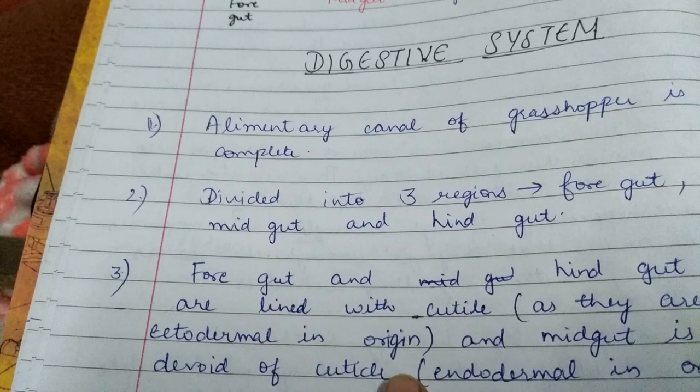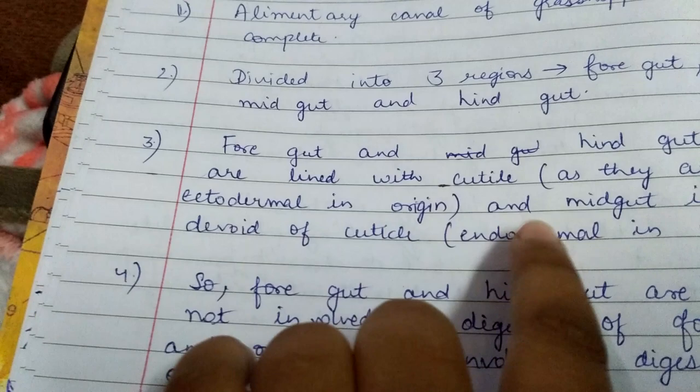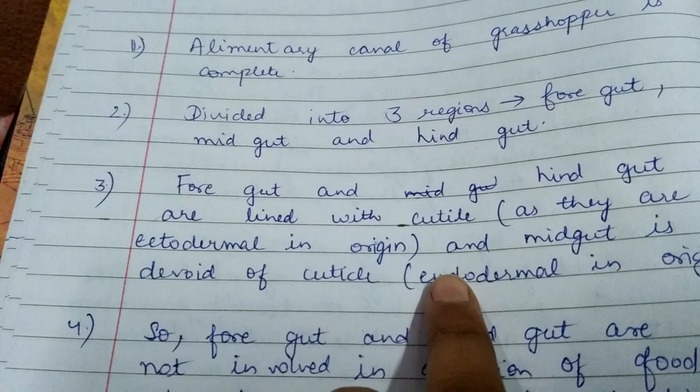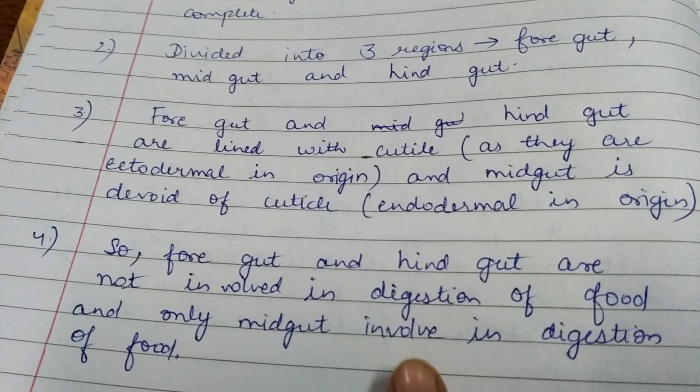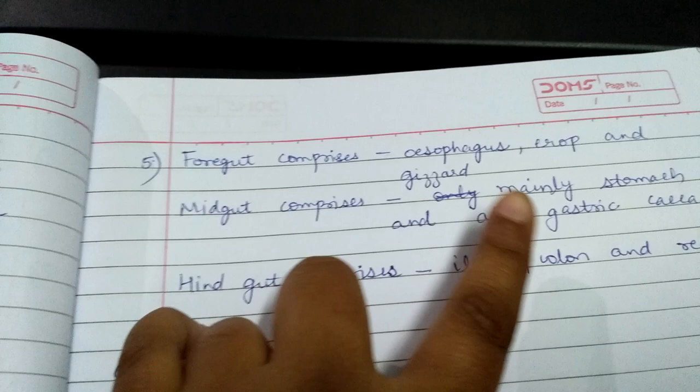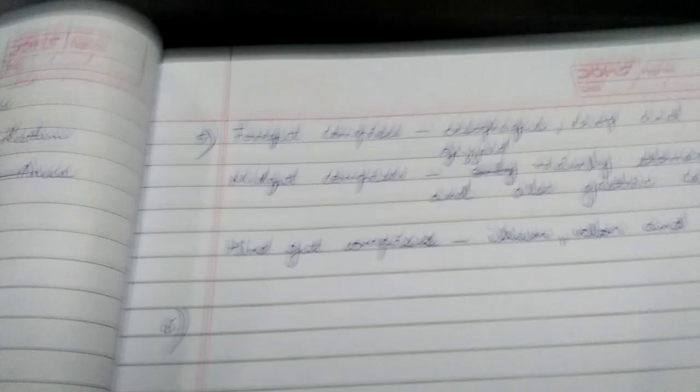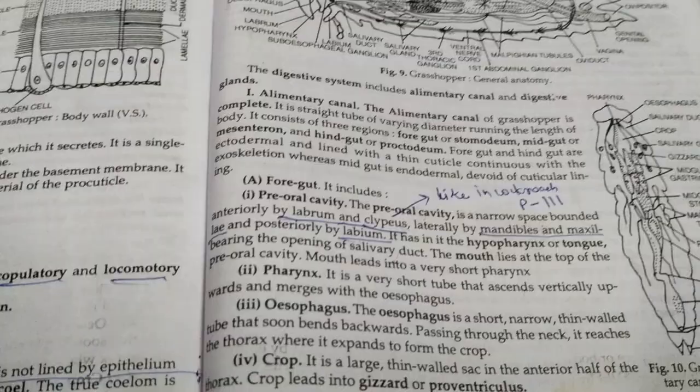Foregut and hindgut are lined with cuticle as they are ectodermal in origin. Midgut is devoid of cuticle and is endodermal in origin. So foregut and hindgut are not involved in digestion of food, and only midgut is involved in digestion of food. Foregut comprises esophagus, crop, and gizzard. Midgut comprises mainly stomach and also gastric ceca. Hindgut comprises ileum, colon, and rectum.